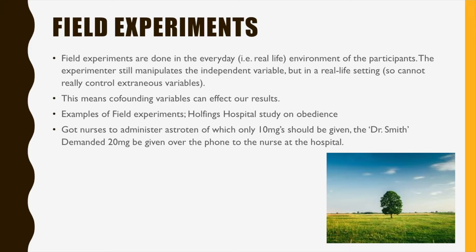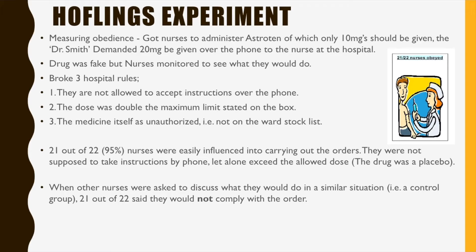An example of a field experiment is Hofling's hospital study on obedience. He got nurses to administer Astroten, of which only 10mg should be given. Describing himself as Dr. Smith over the phone, he demanded that 20mg be given to a certain patient urgently. The study effectively shows obedience and how it is useful to test people in their real-life situation. Notably, the Astroten used in the study was just a placebo — water — not the actual drug.